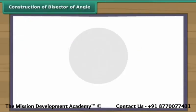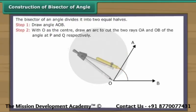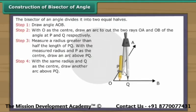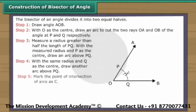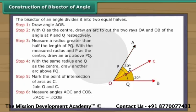Construction of bisector of angle. The bisector of an angle divides it into two equal halves. Let us learn to construct an angle bisector. Draw angle AOB. With O as the center, draw an arc to cut the two rays OA and OB at P and Q respectively. Measure a radius greater than half the length of PQ. With that radius and P as the center, draw an arc above PQ. With the same radius and Q as the center, draw another arc above PQ. Mark the point of intersection of arcs as C. Join O and C. Angle AOC is equal to angle COB. Therefore OC is the bisector of angle AOB.